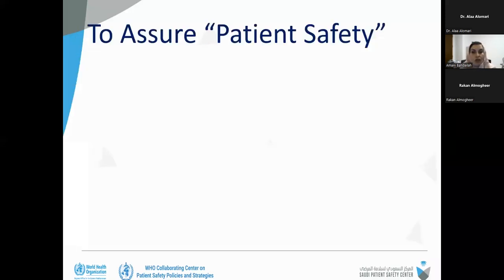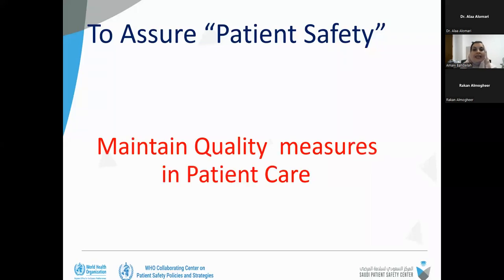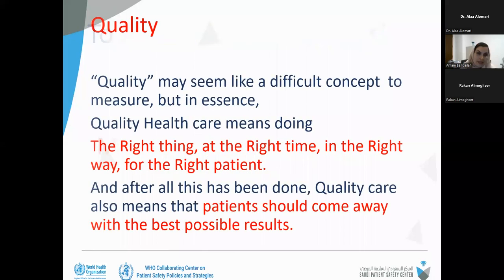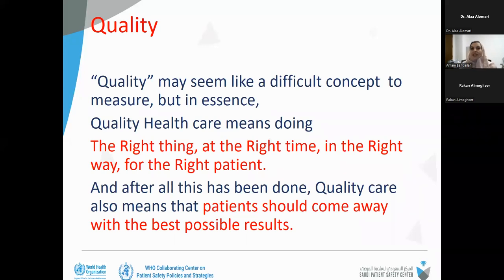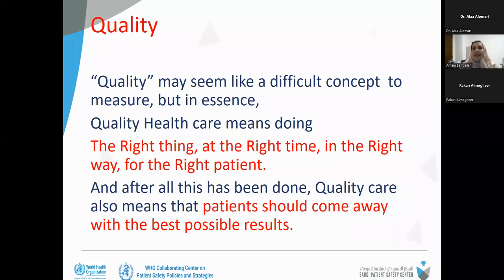This cycle is one of the most important cycles we always consider. If we apply it well with proper quality standards, we close the loop of patient safety. That's why we need to assure patient safety by maintaining quality measures in patient care. The word quality seems like a difficult concept to measure, but within it is the meaning of doing the five rights related to medication management. If we consider those five rights as the most important, we save almost 70% of medication errors.